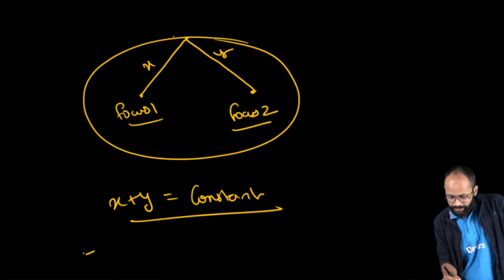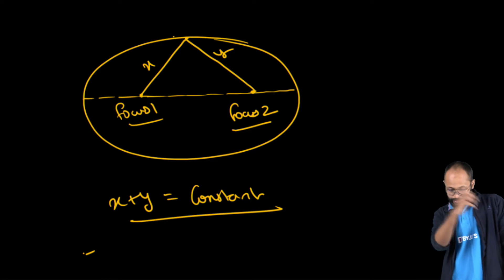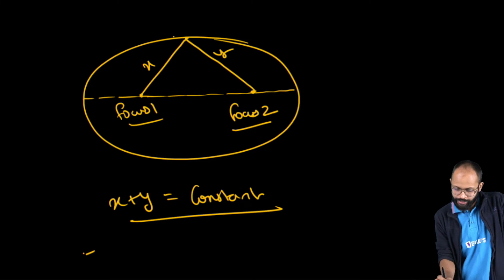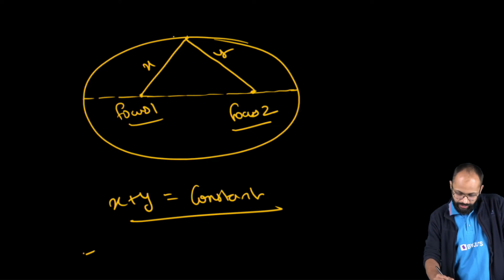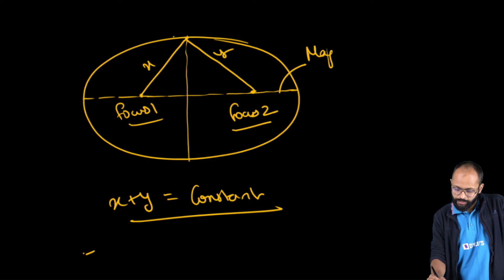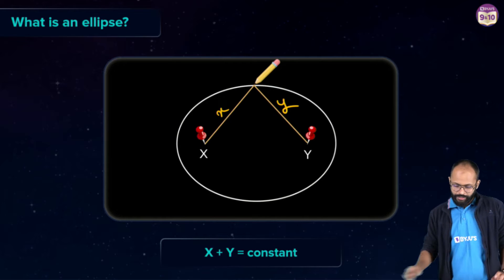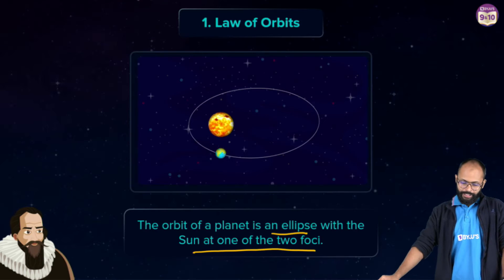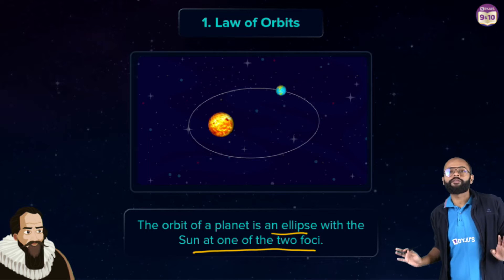The line joining the two ends of the ellipse through the two foci is called the major axis, and the perpendicular line through the center is called the minor axis. So the orbit of a planet is an ellipse with the sun at one of the two foci.